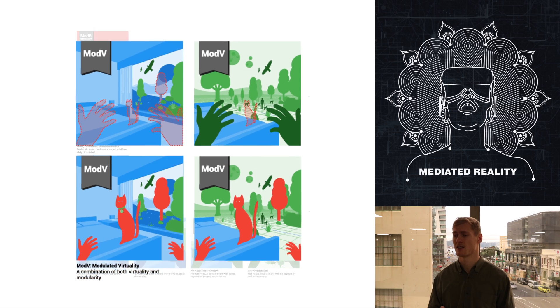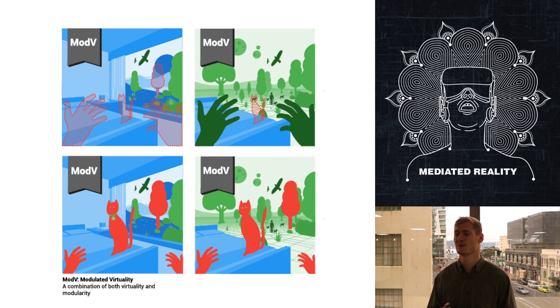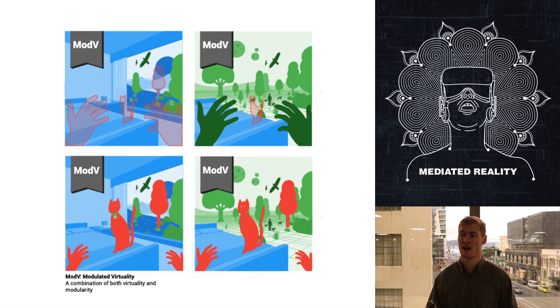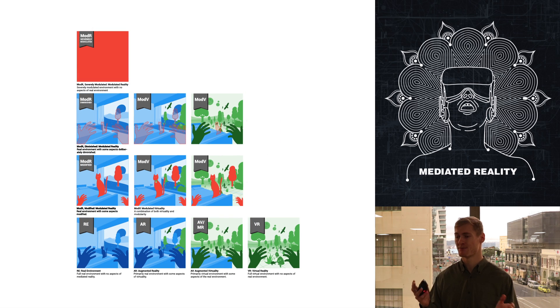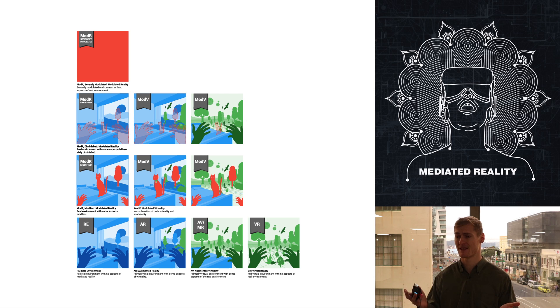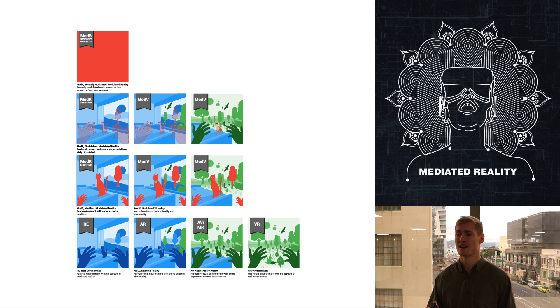Finally, there is modulated virtuality, which is a combination of both virtuality and modularity. Since modulated reality and mixed reality are terms used to collectively describe sub-realities, one can use their imagination to decide what these realities would look like based on this visual representation. I hope you enjoyed this video. Thanks for watching.